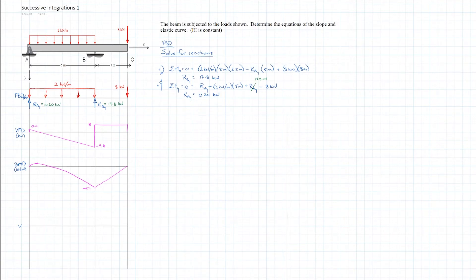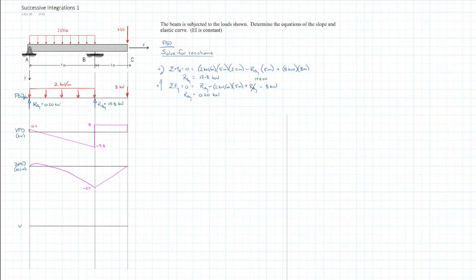We've already taken the free body diagram, applied our equations of static equilibrium to get the reaction forces, and used the graphical method to get the shear force and bending moment diagram. Now we're going to use the method of successive integrations to derive an equation for the elastic curve. Because of the support at B, there's a discontinuity in the moment diagram, so we'll have to break the beam into two sections.